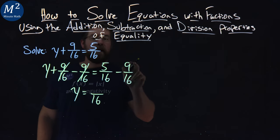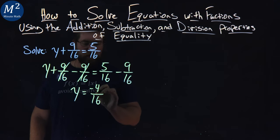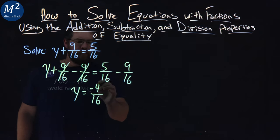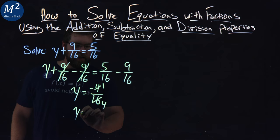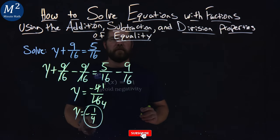So, 5 minus 9 is negative 4. Now, this simplifies. 4 and 16, well, 16 divided by 4, we have a 1 right there. So, y equals negative 1 4th, right here, is our answer when we solve it.